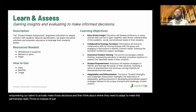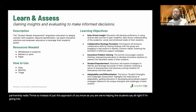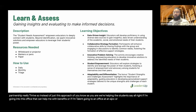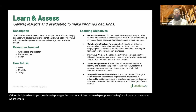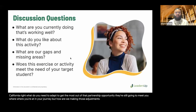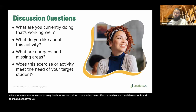We really want to make sure we're forming strategies collaboratively, thinking about problems that we need to solve that our partners can help us with because they're holding a whole different area of expertise that we can leverage. We amplify how we're empowering our students and talent to make decisions, and think about where they need to adapt to make this partnership really thrive. Instead of just a 'come as you are' approach, we're helping students say: if I'm going into this office that can help me with benefits, or if I'm talent going to an AJCC or American Job Center in California, what do you need to adapt to get the most out of that partnership opportunity? What light bulb moments just happened? Share it out.